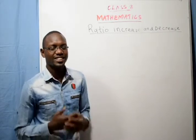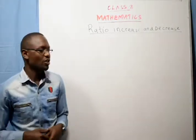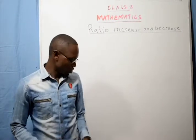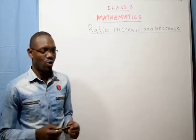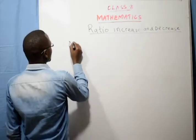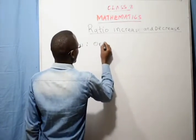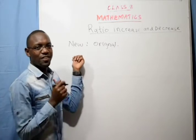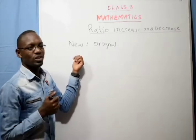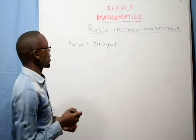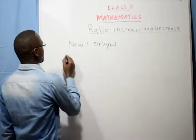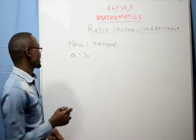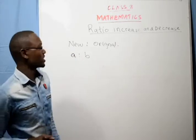Sometimes you can be told that a quantity increases in a certain ratio to get the new quantity, or after an increase in a certain ratio, a quantity became a given value, and you need to get the original quantity. To increase quantities using ratios, we use the formula: new quantity is to original quantity. So in the ratio A is to B, if something increased in the ratio A to B, then A is the new quantity and B is the original quantity.